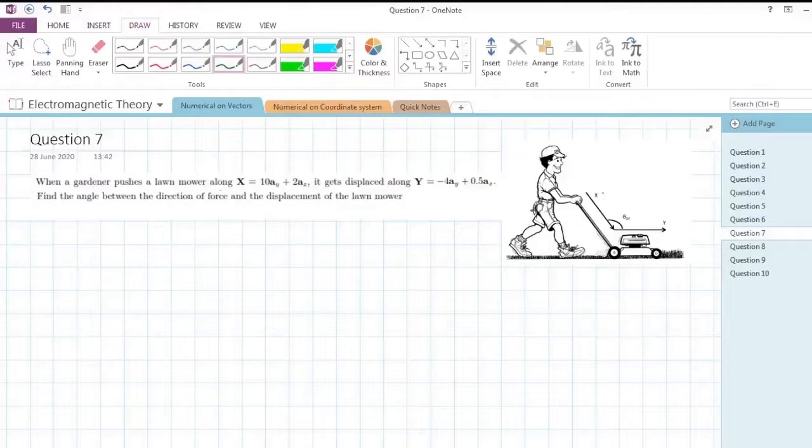The force applied by the gardener is in this direction and the lawnmower will move in the forward direction. We have to find out the angle between these two vectors: vector x representing the force and y representing the displacement. We have represented that angle with theta_xy.